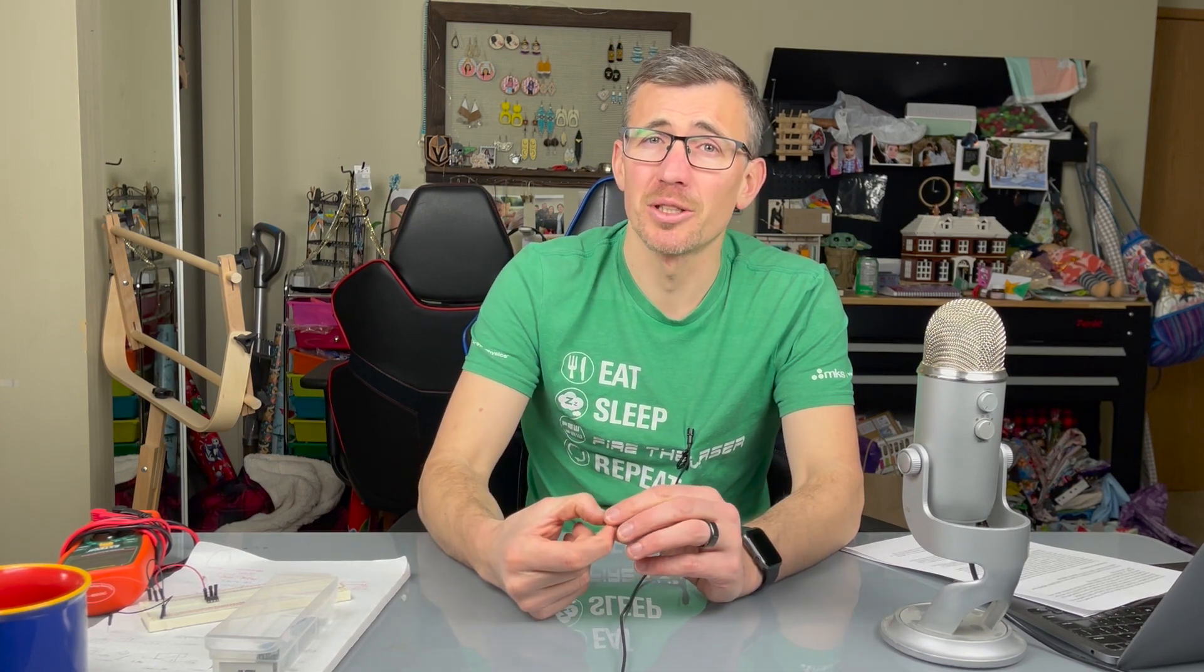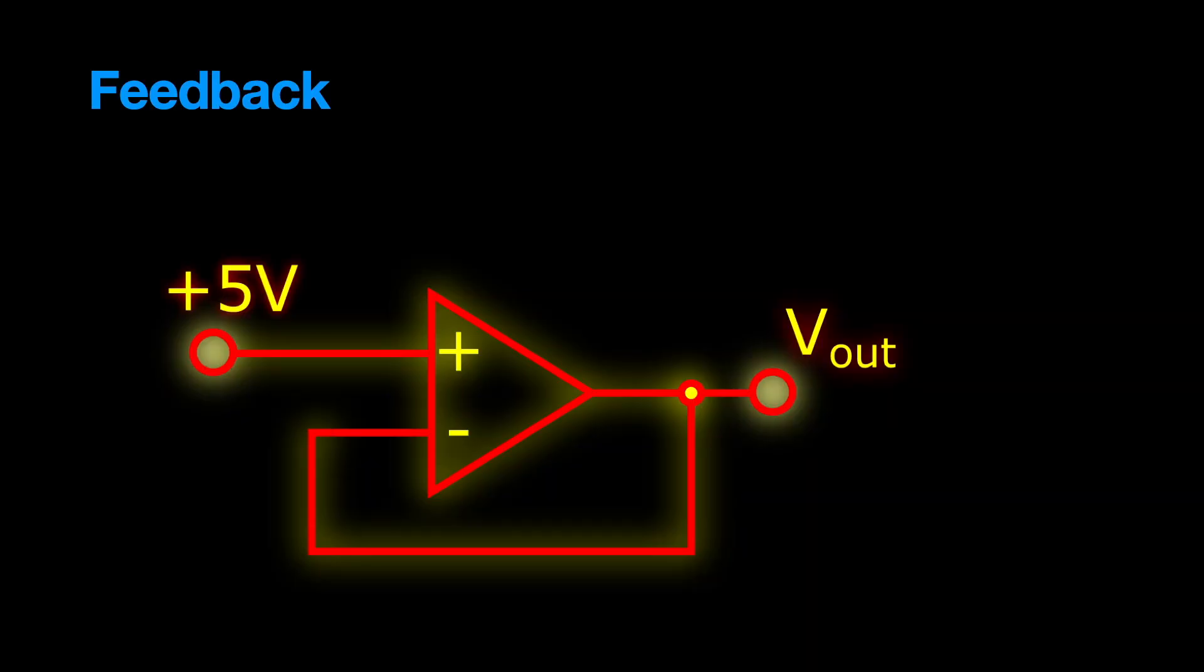A minute ago we said that the differential gain was uselessly high for our op amp, but the op amp itself was highly useful. So how do we reconcile this? The key to reconciling this is the concept of negative feedback. To understand this concept of negative feedback, we're going to make a very contrived circuit. We're going to take our op amp and wire its output back into its inverting input. This is a classic example of negative feedback.